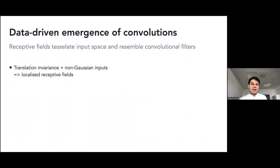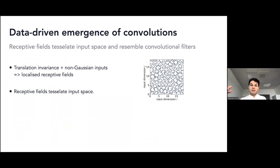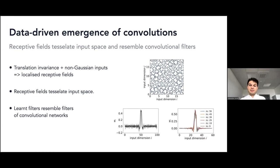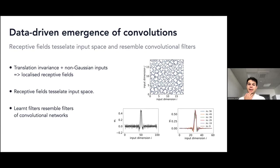We also checked that these receptive fields are spread out evenly in input space. Plotting the center of each localized neuron across the whole input space, they nicely tessellate the 2D plane — they are spread evenly throughout. That's the second hallmark of convolutions. We also trained a simple convolutional network on this task and looked at its filters: for different kernel sizes, you get roughly the same weight, and it really looks a lot like the weights you get from training the fully connected network.